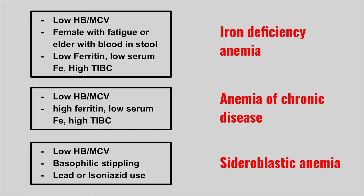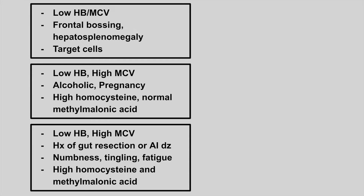Next, we're going to have a patient with low hemoglobin, low MCV, frontal bossing, and hepatosplenomegaly, and on peripheral blood smear we see target cells. This is beta thalassemia.